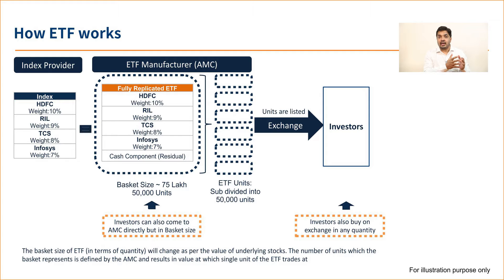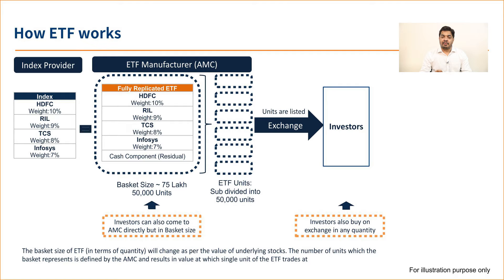You can go on the exchange and buy these ETF units in any quantum. Unlike buying directly from the AMC where you need the basket size — around 75 lakh rupees for Nifty 50 — on the exchange you can buy even a single unit of Nifty 50 ETF at a price of around just 150 rupees, or whatever the per-unit price of that ETF is. This transaction is similar to stocks.